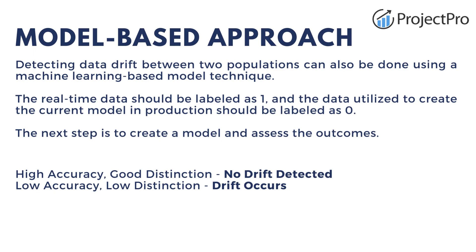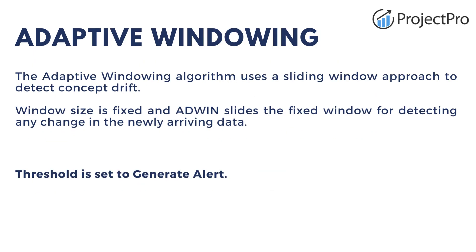The other technique is the adaptive windowing technique, which is a sliding window technique used to detect concept shift. It works by using a fixed window size and slides over new data to detect if there is any change. We can also set a threshold to generate alerts, so if any kind of shift happens — concept shift, gradual shift, recurring shift, or sudden shift — and it is above that threshold, it will generate an alert.